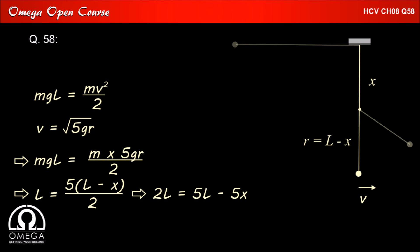Which implies 2L equals 5L minus 5x, which implies 3L equals 5x, which implies x by L equals 3 by 5, that is 0.6. This is our answer.